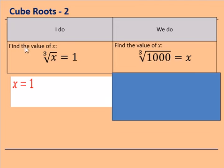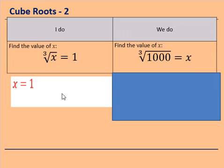For the next I Do: find the value of x where cube root of x equals 1. So what number cube rooted equals 1? Well, 1 cubed equals 1, so the cube root of 1 is also 1. Copy that down in your book, then try the We Do.